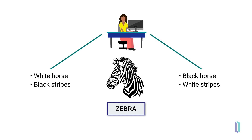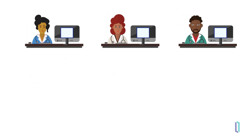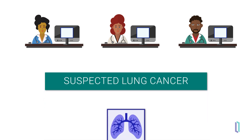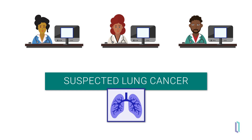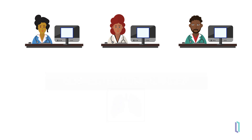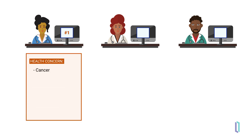In the world of healthcare, there are millions of zebras that systems need to describe, and semantic interoperability requires an agreement on which description to use. Let's consider how this concept applies to a real-world example from three separate electronic health record systems. Each clinician is documenting the same issue — suspected lung cancer. One system models this data as three different elements: the health concern of cancer, the body site of lung, and the status of suspected.